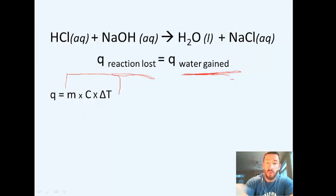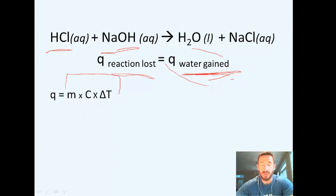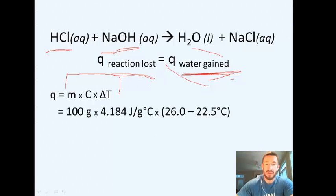So we're saying the mass of the water times the specific heat of water times the change in temperature. Now, for that mass, we know that we have 50 milliliters of each, which basically means we have 50 grams of each. So we're going to add those together. The mass of both the hydrochloric acid and sodium hydroxide will be 100 grams. So our setup looks like: we have 100 grams multiplied by the specific heat of water, which is water as a liquid, then multiplied by the change in temperature. This is true for both solutions because they both start off at 22.5 and then go up to 26.0 degrees Celsius.